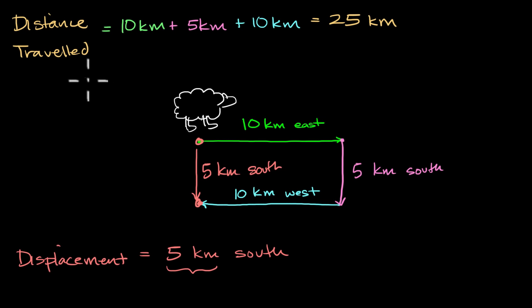So let me write this down. This is total length of path. Total length of path is the distance traveled, while the displacement is the change in position.